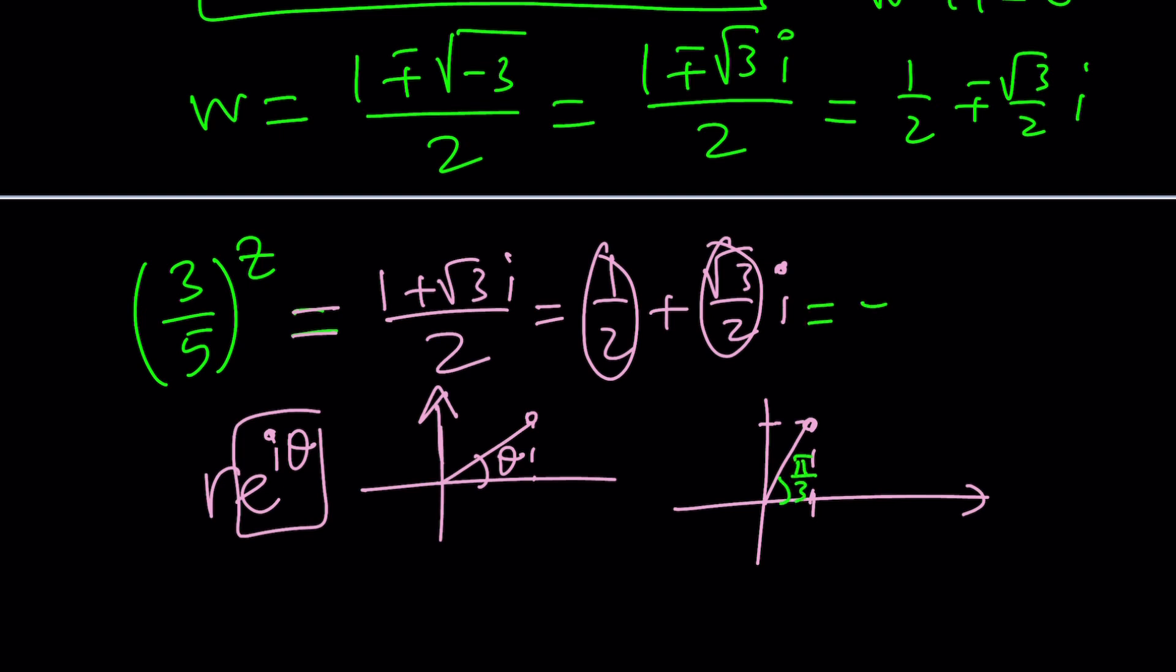So this can be expressed as e to the power i times pi over 3, which also explains why this is one of the cube roots of negative 1. Because if you cube it, you're going to get e to the power i pi, which is negative 1 in the complex square. Does that make sense?